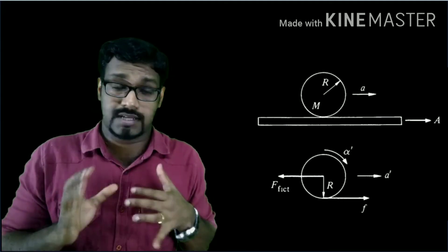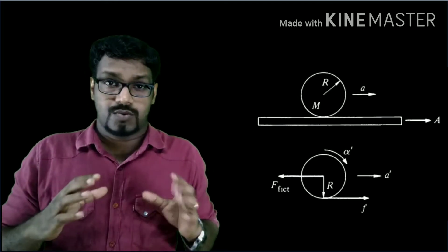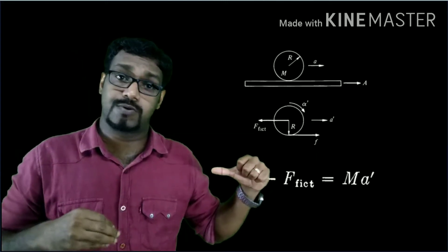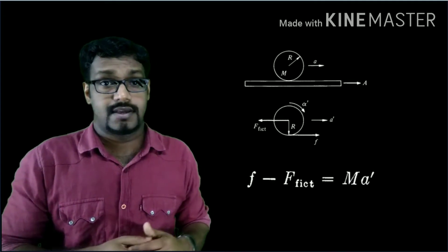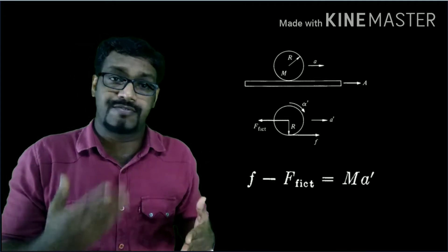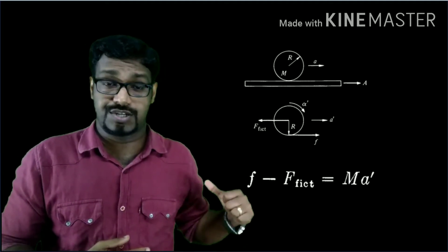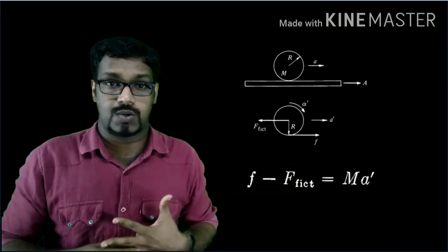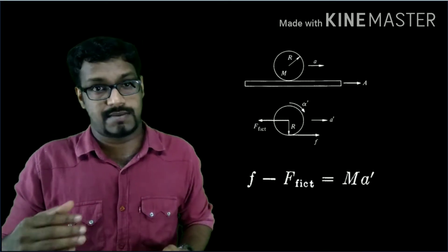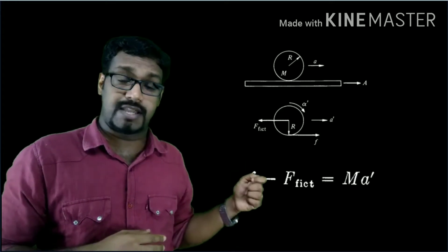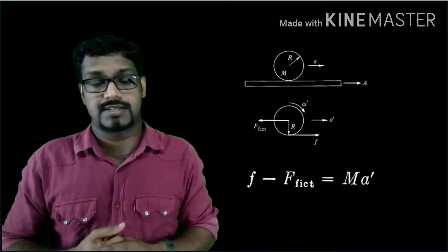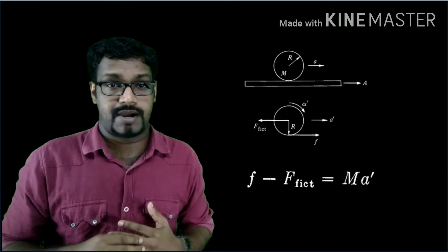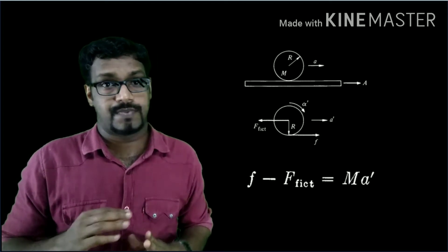Now let's see what forces are acting on the cylinder. When you observe from a frame of reference attached to the plank, you see someone is pulling the cylinder in the direction opposite to the direction of acceleration of the plank — that force we call the fictitious force. There is also a frictional force acting in the opposite direction to the fictitious force, which we call small letter f. According to Newton's law, the total force equals mass times acceleration, so f minus F_fictitious equals M times A'.